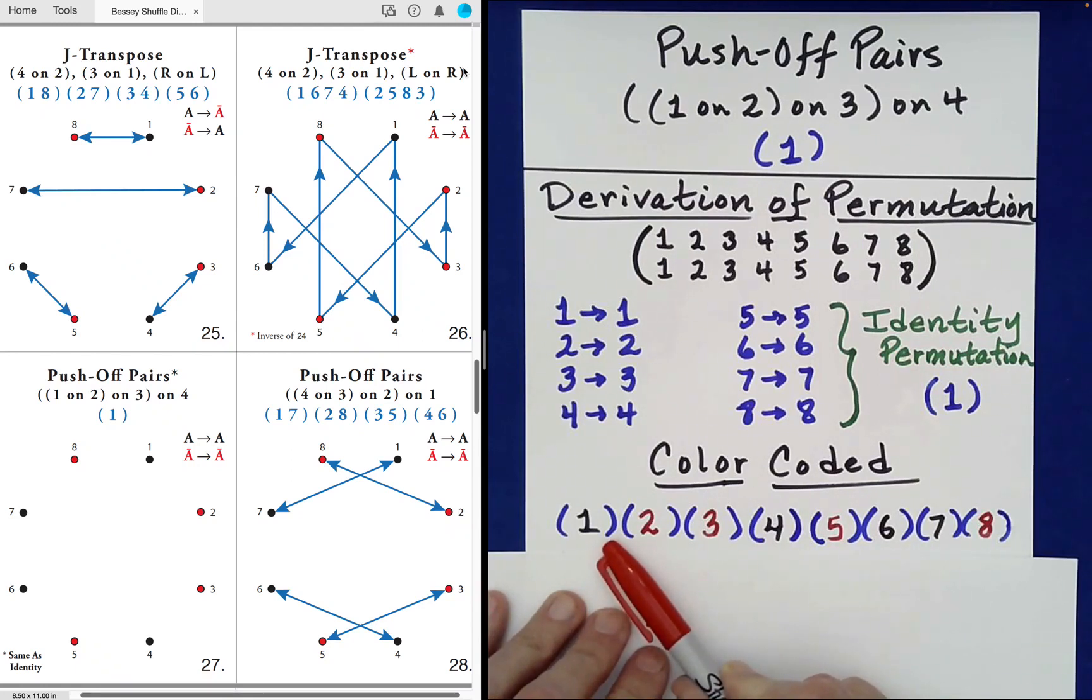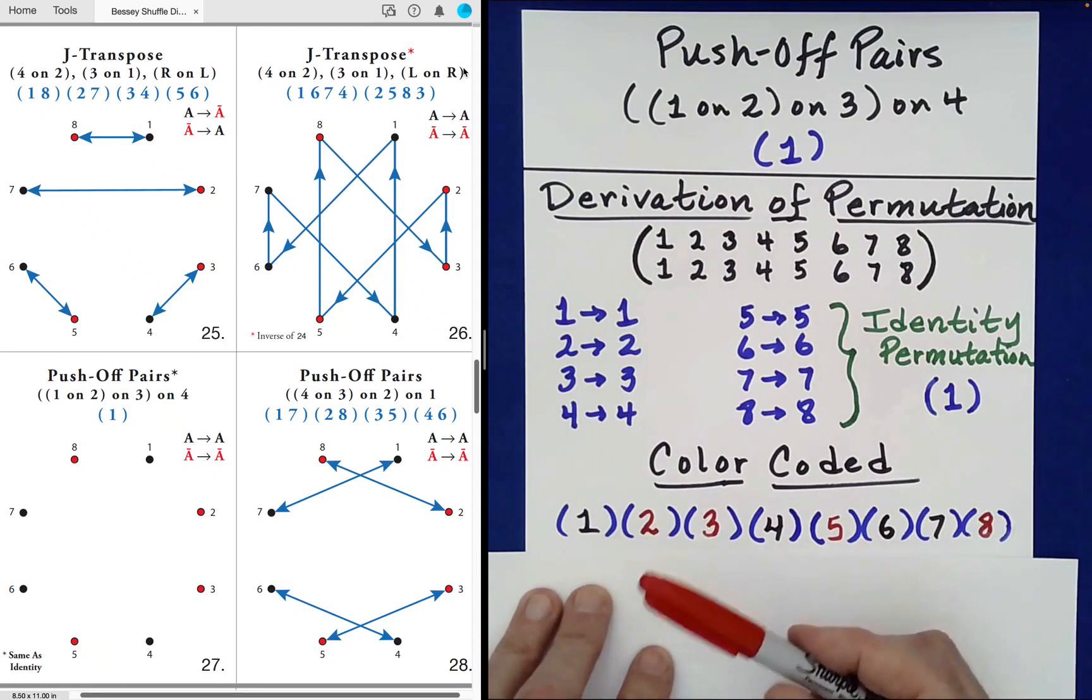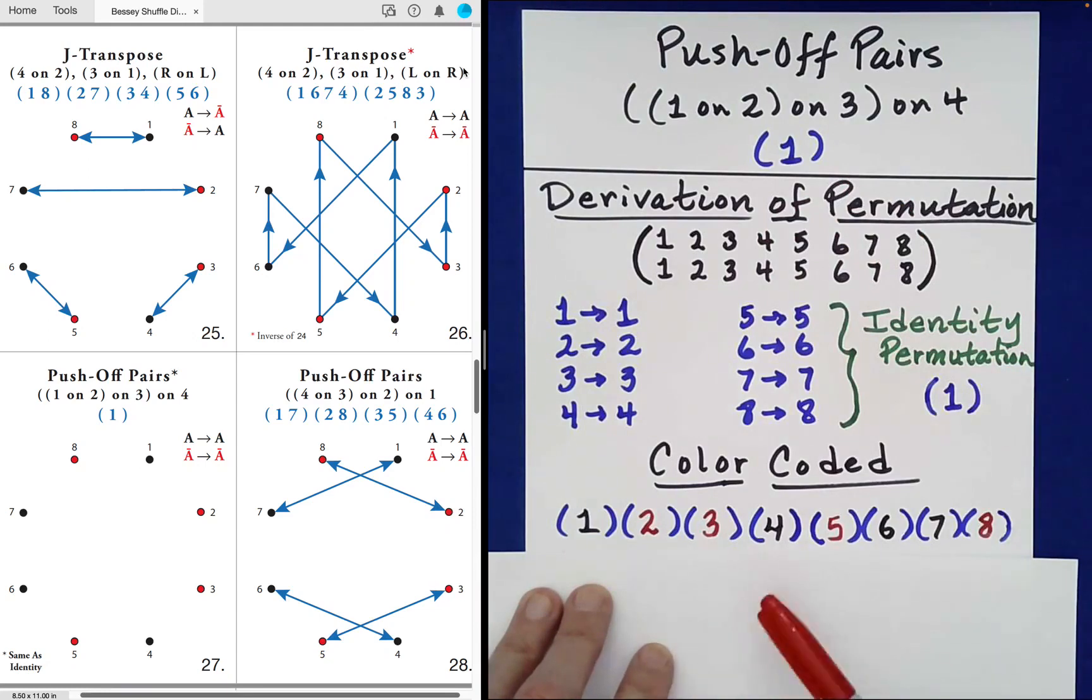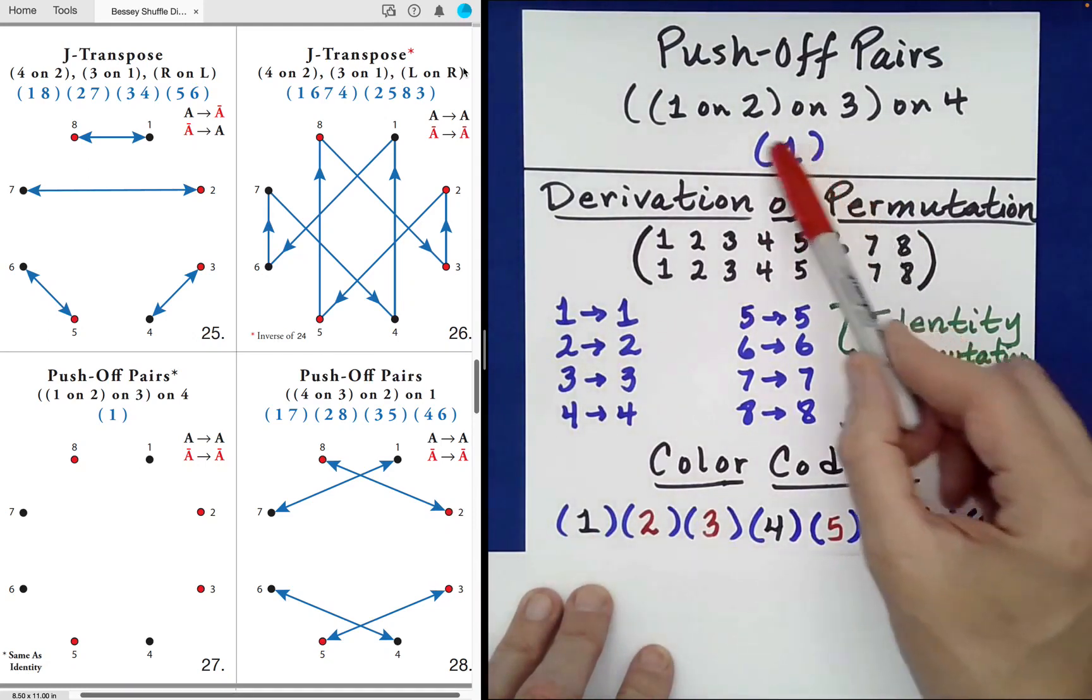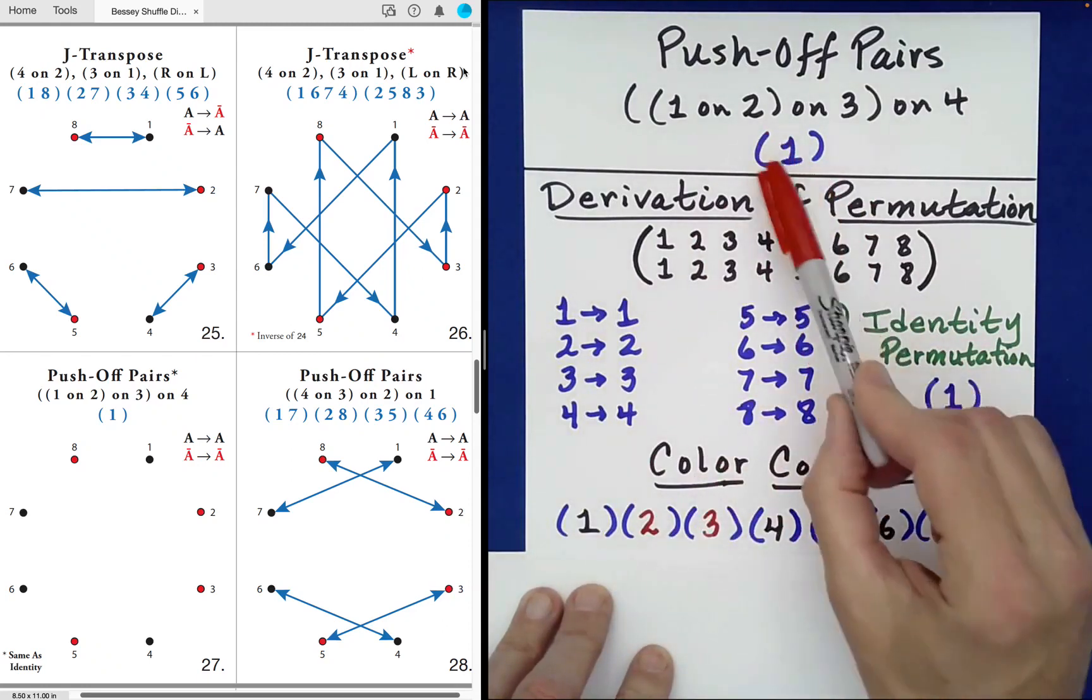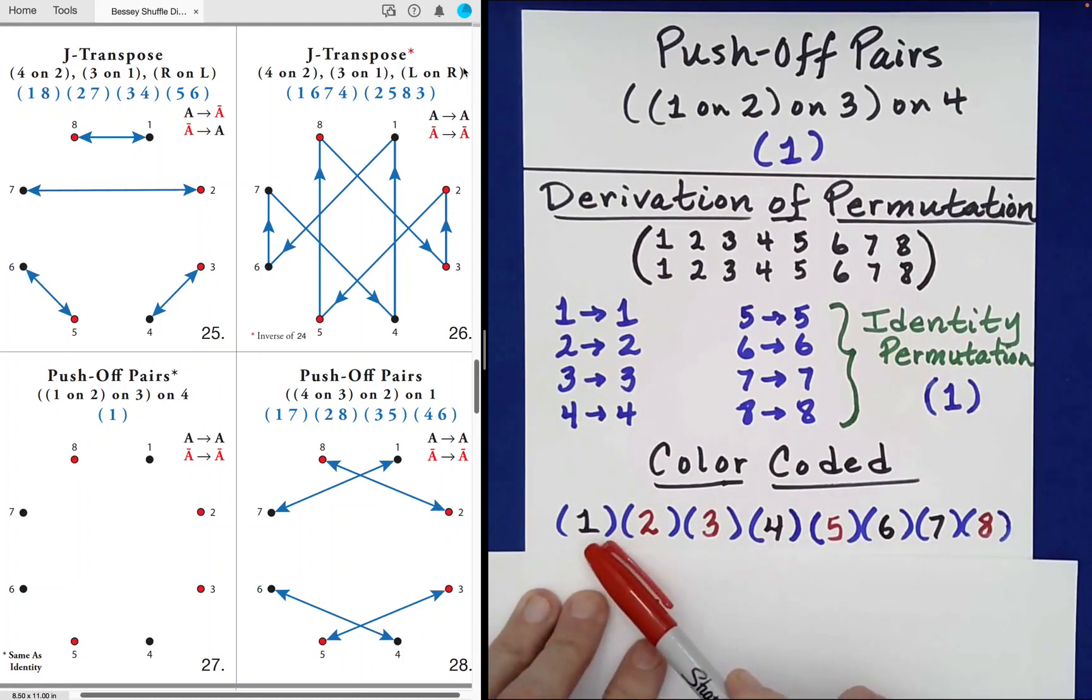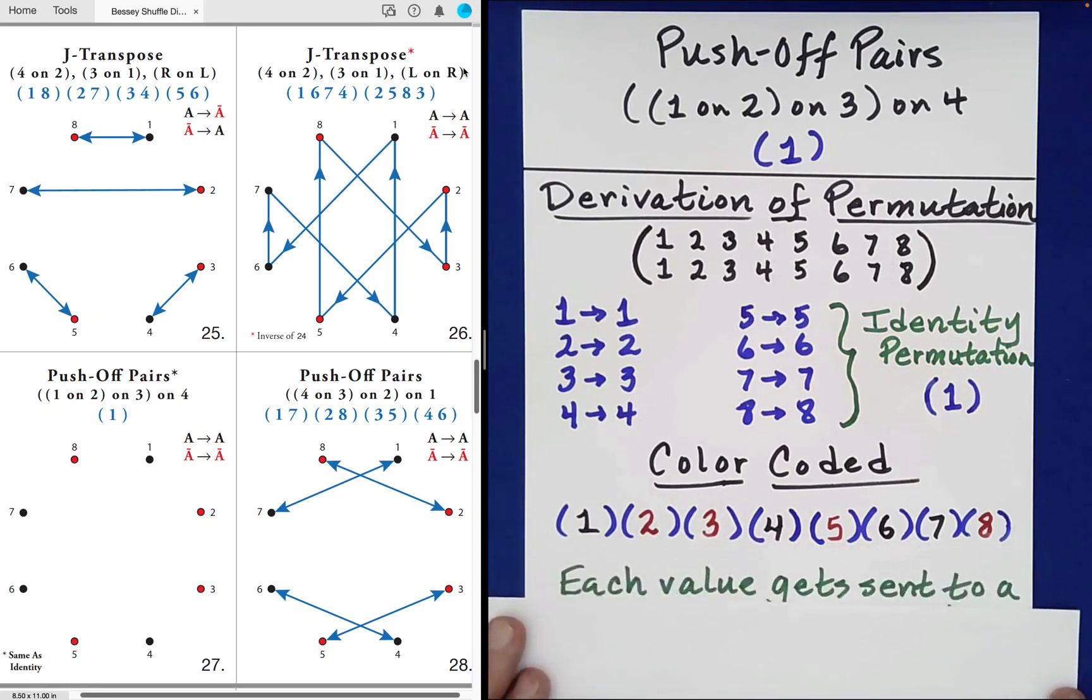So what we see here is we get eight one cycles. And as we've discussed in this series, as long as the context is clear as to how many objects you're working with originally, we normally do not include one cycles in our cycle notation of permutations. But the problem is, if we drop all of these, we have nothing to write down here. So what is typically done is that we just write down a set of parentheses with the first value inside. And this then implies that all of the other values, two through eight, are fixed points. They don't go anywhere. And so we see that black one goes to black one, red two to red two, red three to red three, and so forth. So each value gets sent to a value of the same color, because each value is being sent to itself.